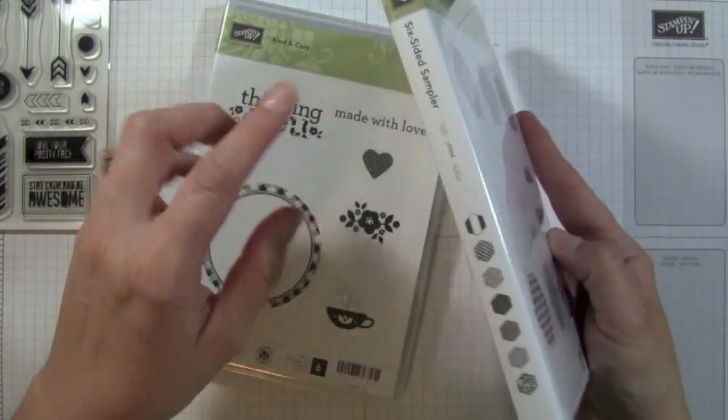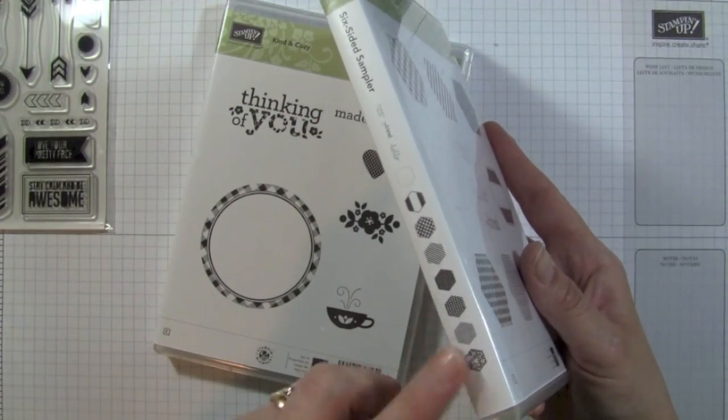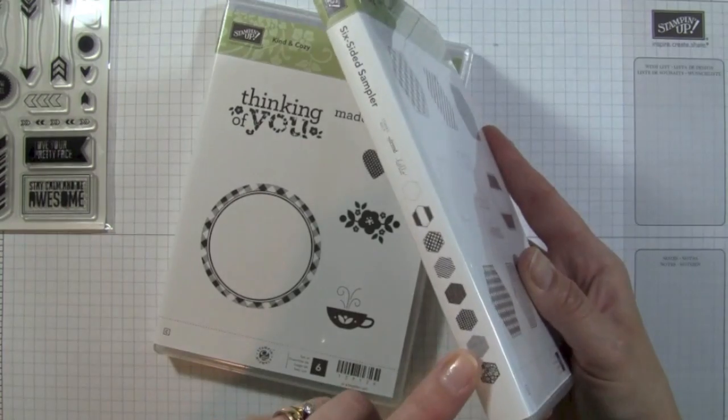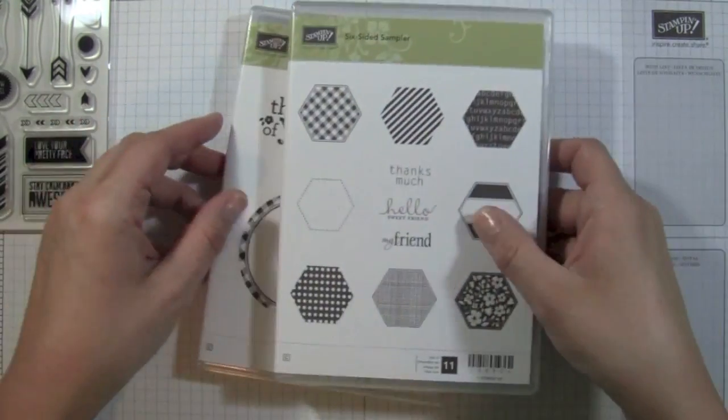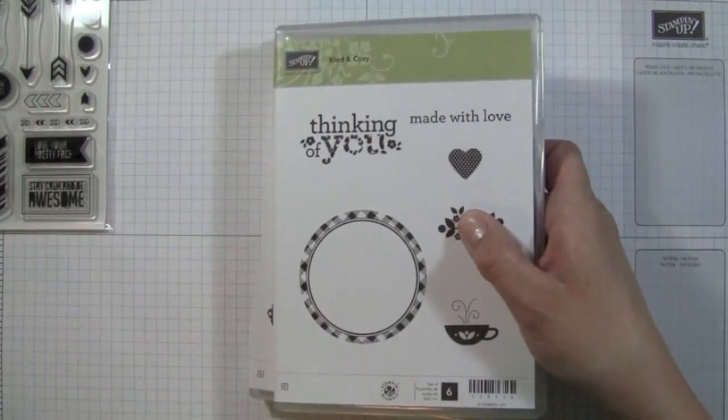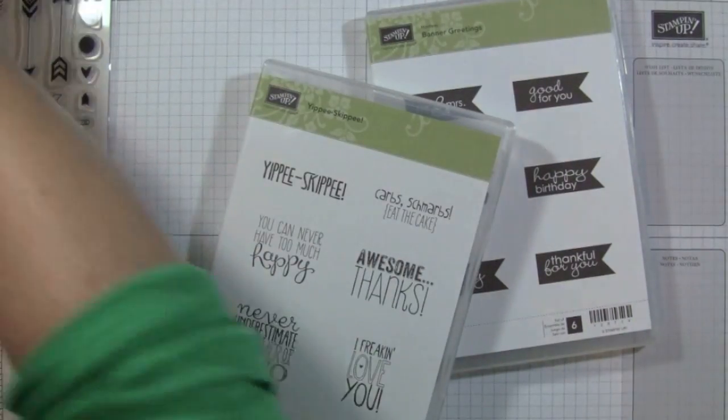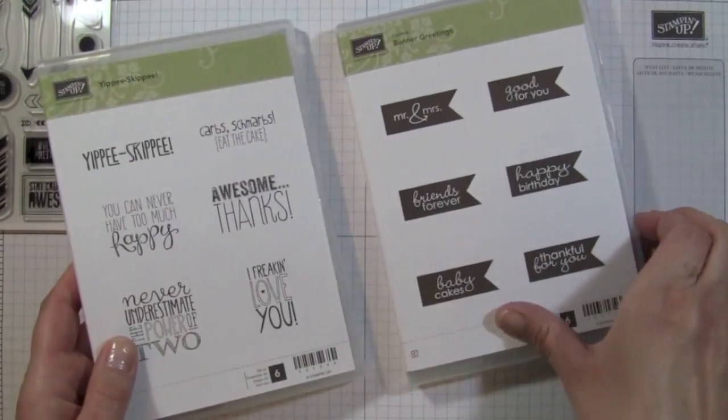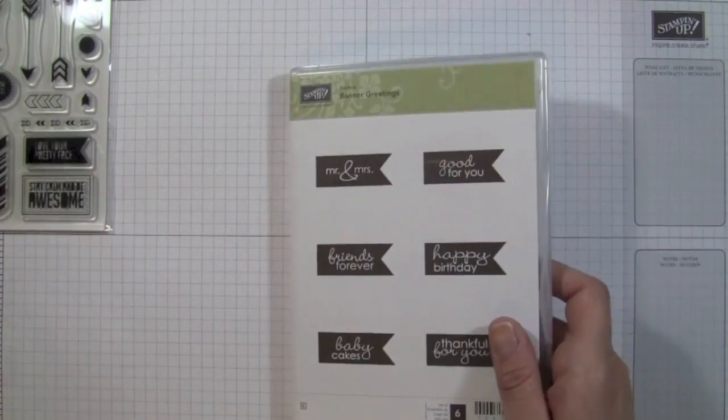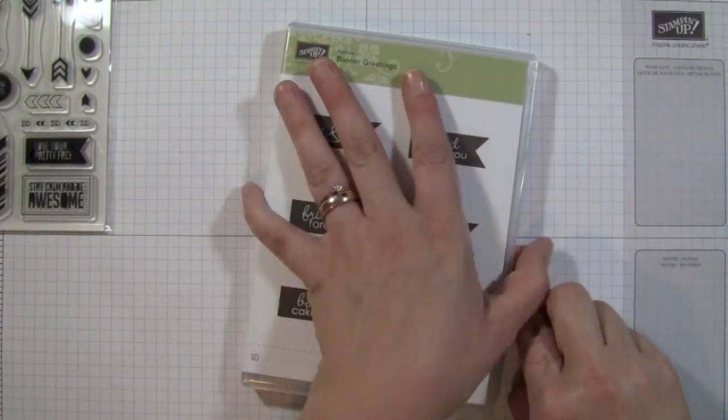They have the name of the stamp set along with some samples on the side, so you can see, depending on how you keep them stored, what your stamp set is, and then they have the images on the front. I have one that's brand new, I haven't even taken the cling off the back yet, and then there's this one, which is a Hostess stamp set currently, and you have options with this.